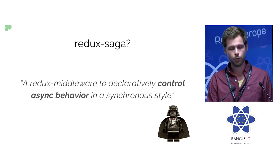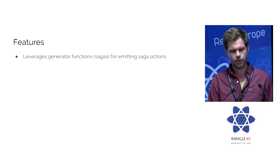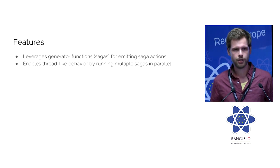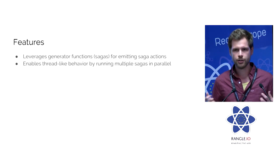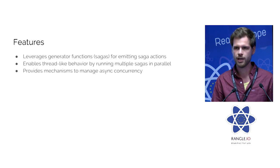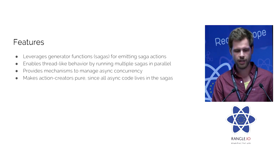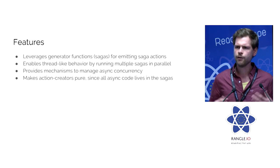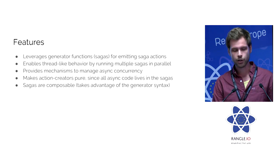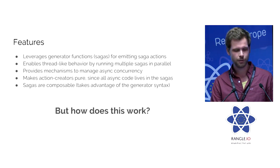I will go into the syntax right away. Just some features: it enables you to structure your code in a thread-like behavior, so you can fork some code and do your async calls in a declarative way with effects. It provides mechanisms to manage async concurrency, so you can make sagas dependent on each other and let them talk through actions. It makes action creators pure, so you don't have to think about whether calling an action creator returns a promise or a plain object. And they're composable, which is super awesome.